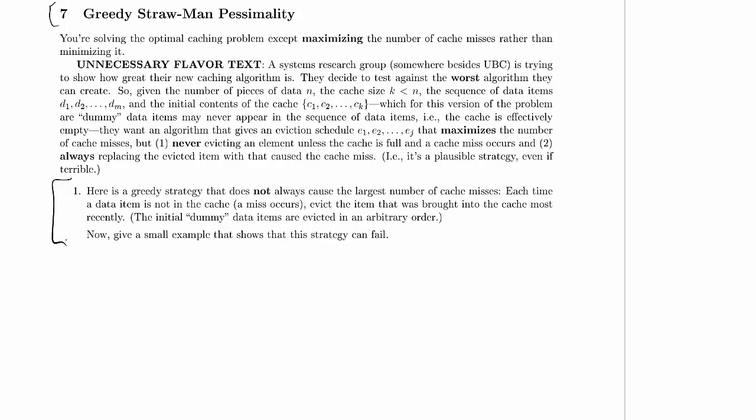And the initial dummy data items are going to be evicted in an arbitrary order because they were all brought in at the same time right at the start. So we have to evict them first. That's a constraint up here. But once we've gotten rid of those dummy items, this is supposed to not give the largest number of cache misses.